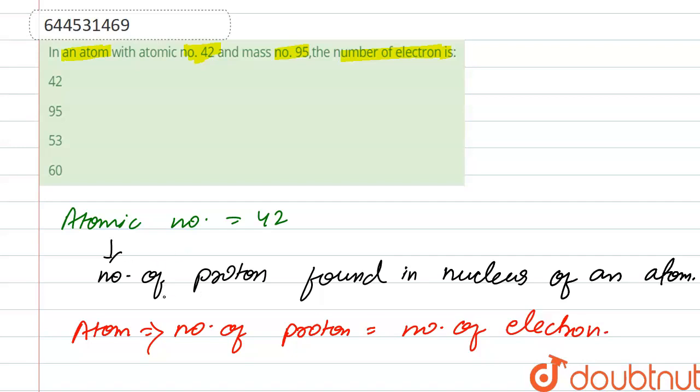So here, atomic number indicates the number of protons. So the number of protons is 42, that's why the number of electrons is also 42. So our correct option is option first. Thank you.